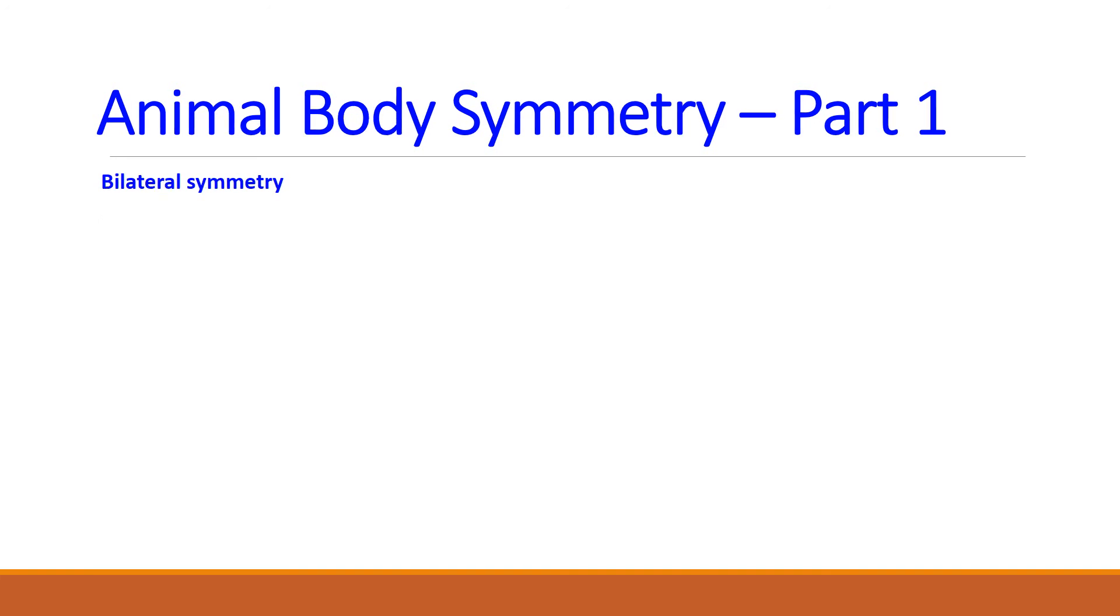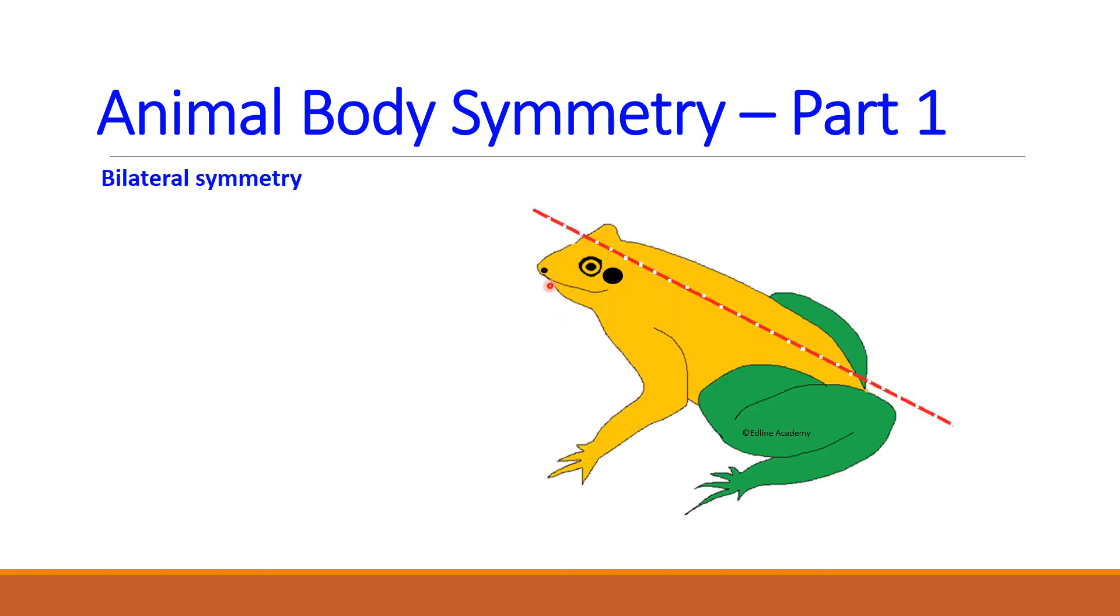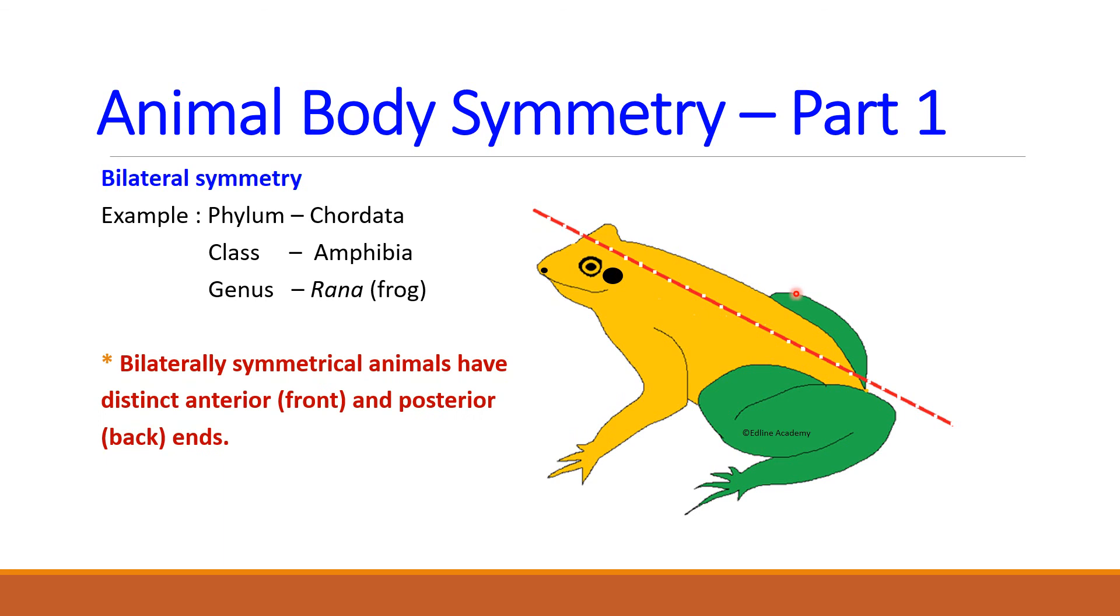Now you are going to learn about bilateral symmetrical animals. Bilateral symmetry is the animal's body can be divided into two identical halves through a single plane which passes through the midline or the central line of the body. Take a look at this diagram. This is a frog. It belongs to phylum Chordata and class Amphibia. We can divide the body of this frog into two identical halves along this midline. There is no other line that can divide animal into two identical halves. So this is a good example for bilaterally symmetrical animal.